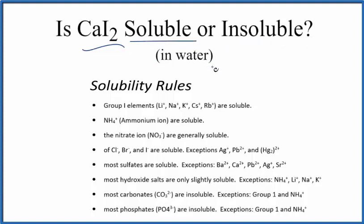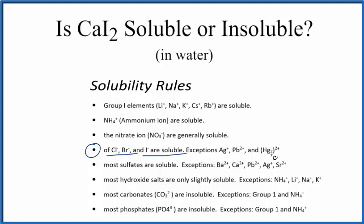If you've memorized the solubility rules, as we go down the list, it says that compounds with the chloride, bromide, or iodide ion are soluble, with a few exceptions like silver, lead, or mercury iodide. So in this case, we have calcium iodide, and it's going to be soluble in water.